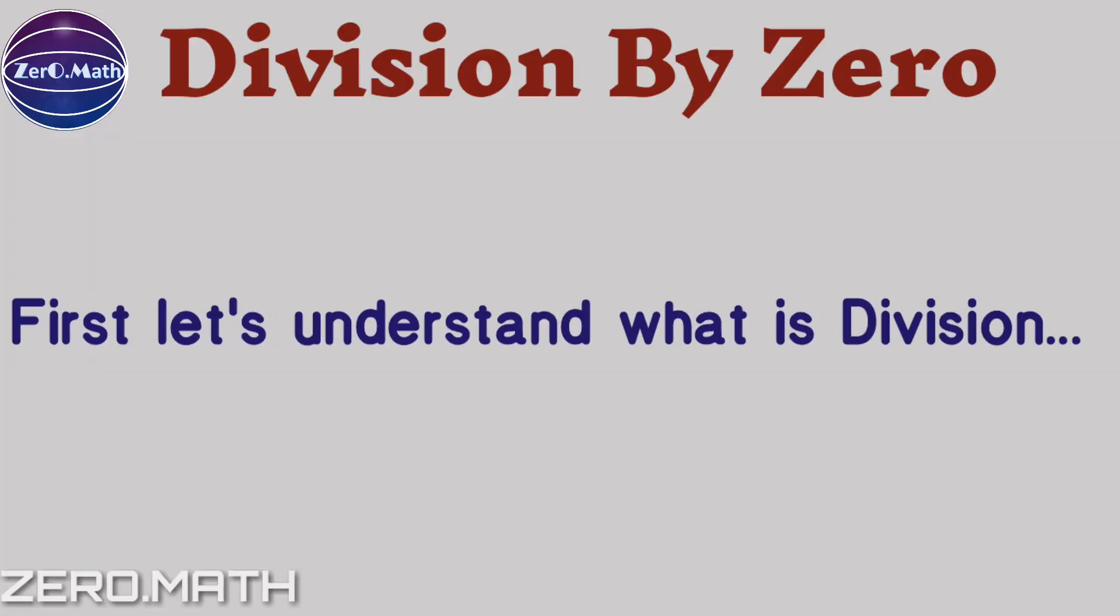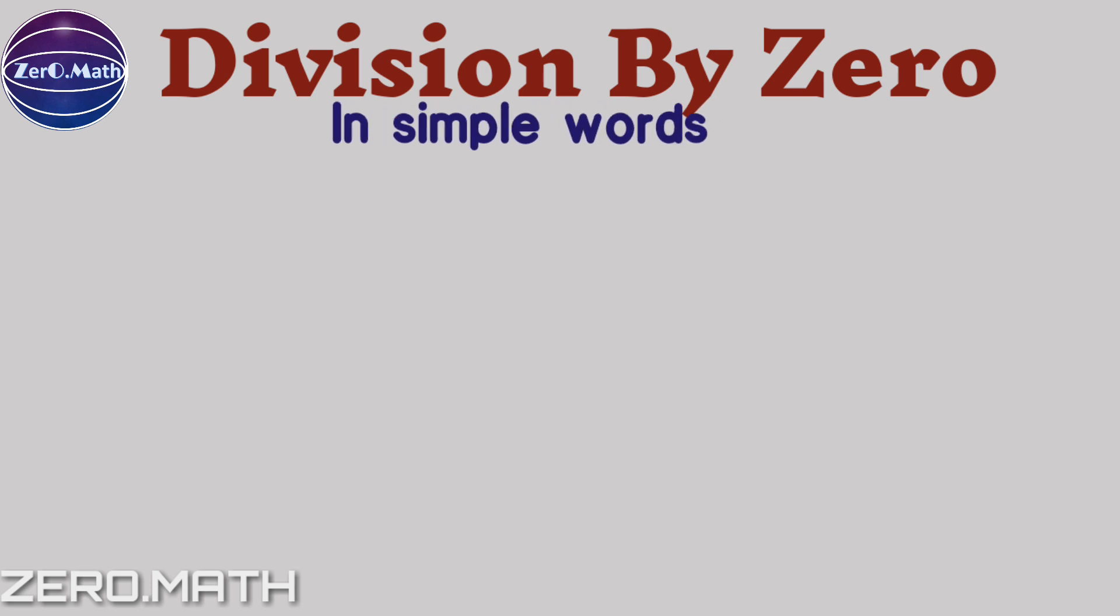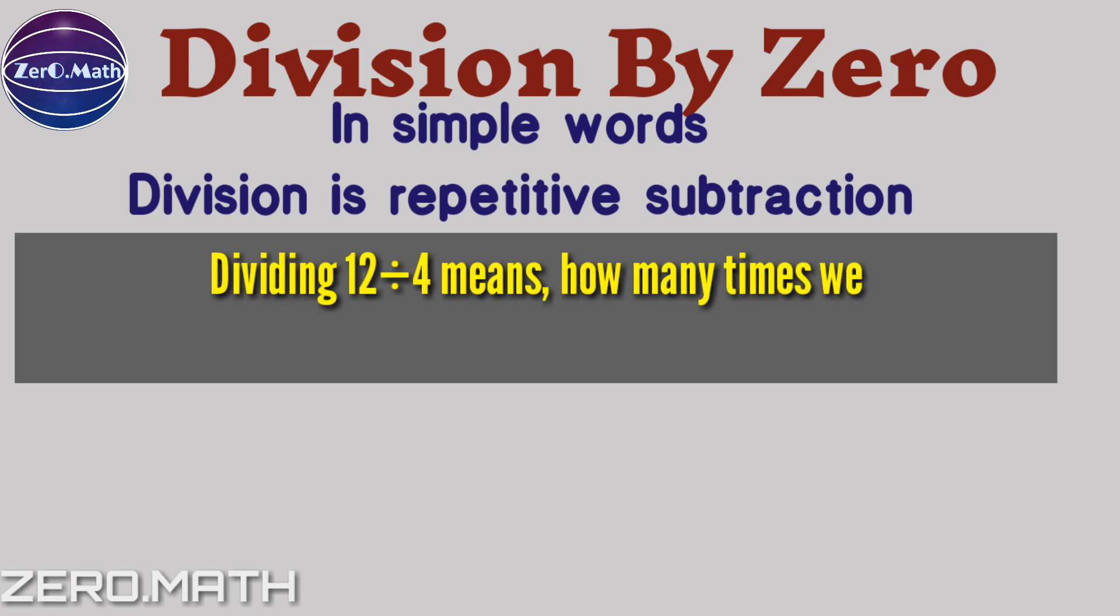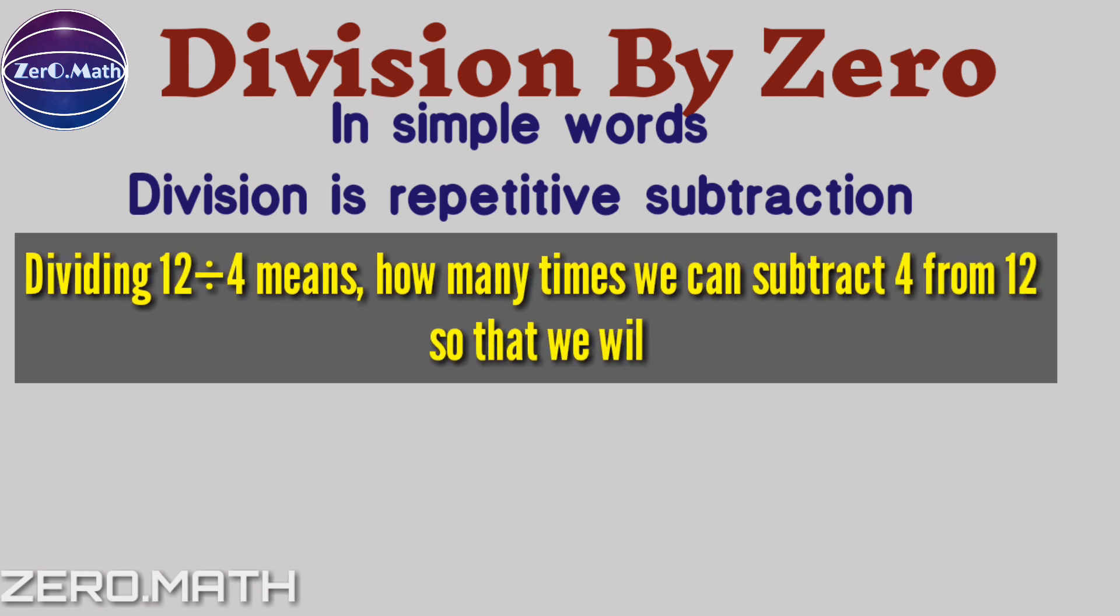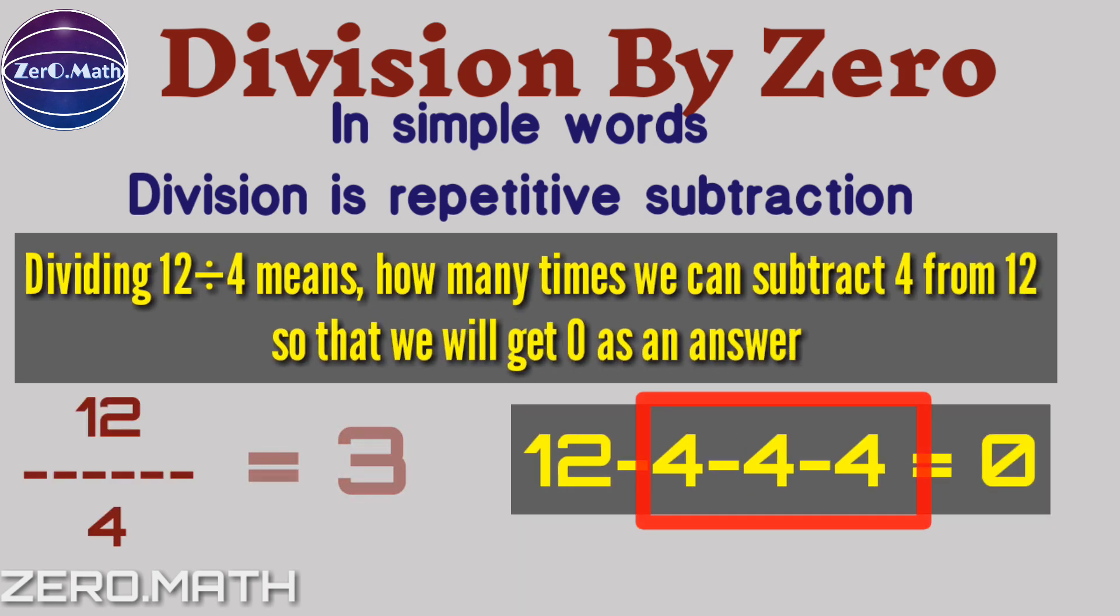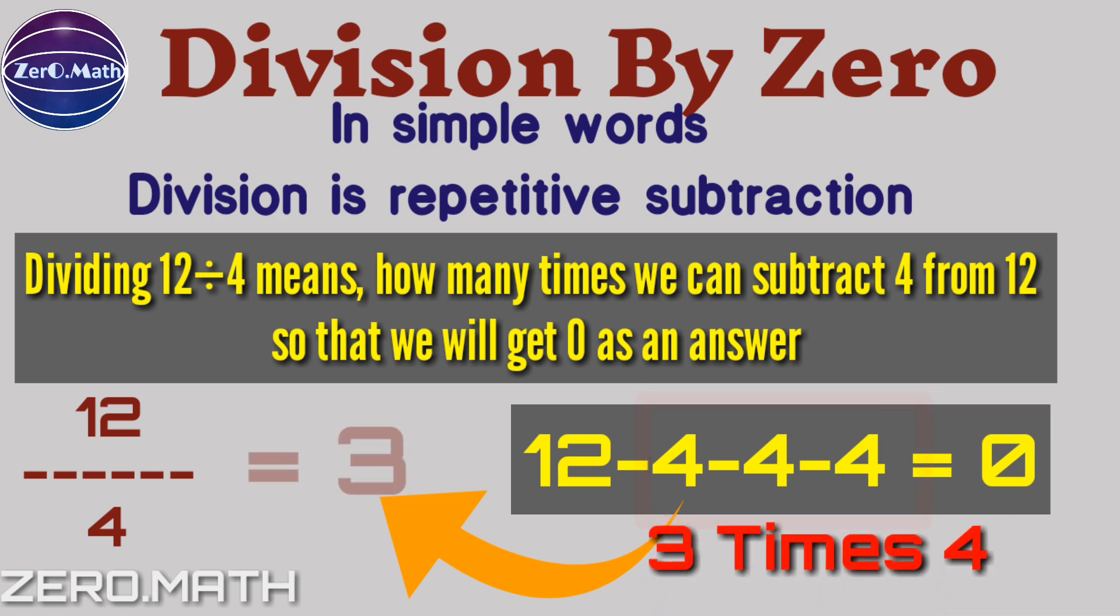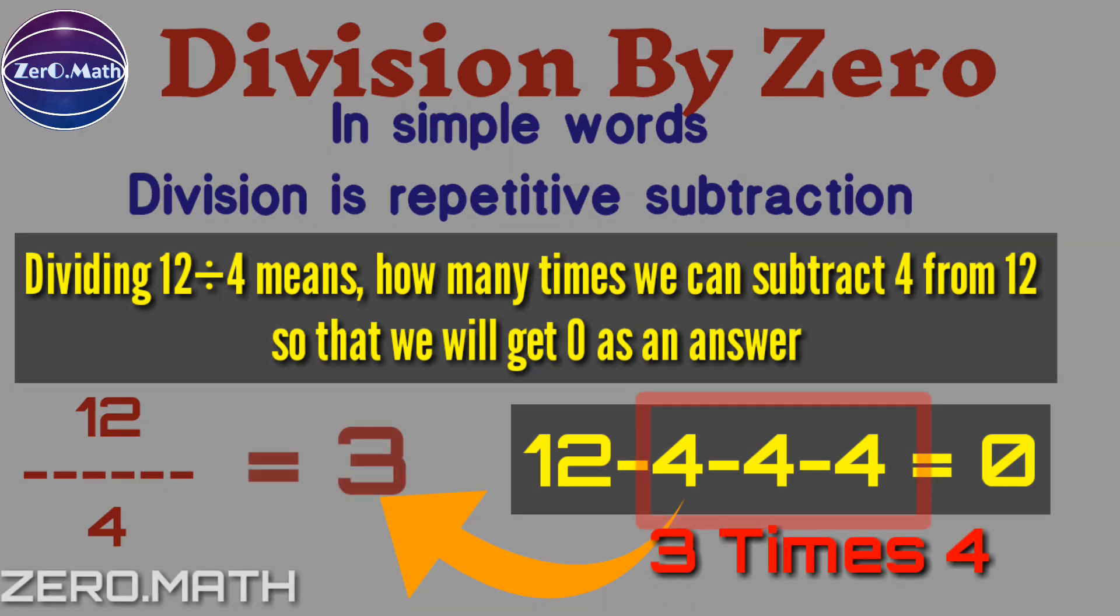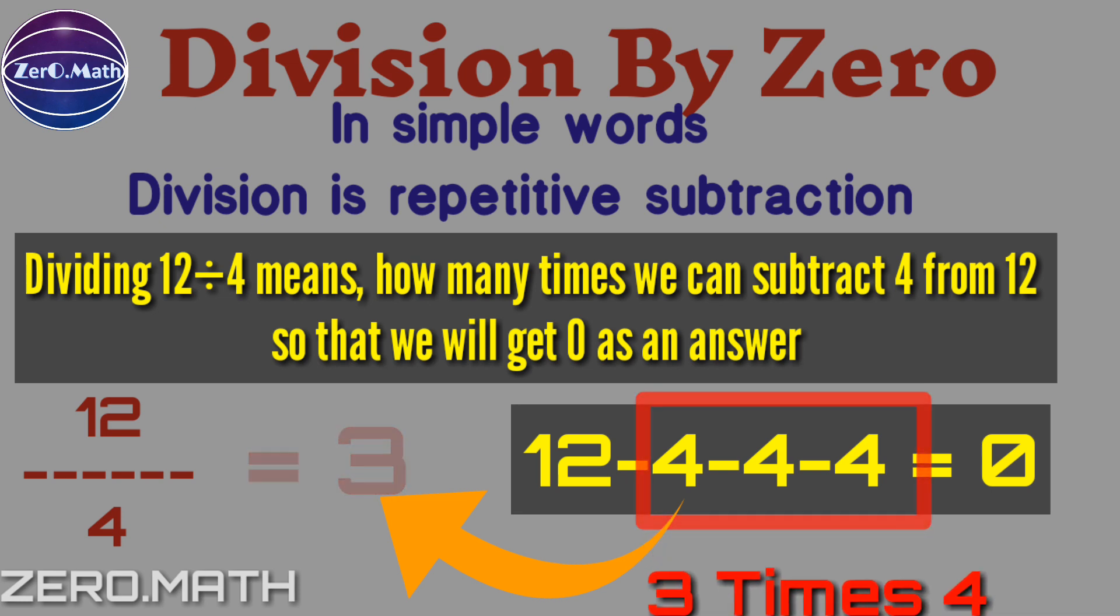First, let's understand what is division. In simple words, division is repetitive subtraction. Dividing 12 by 4 means how many times we can subtract 4 from 12 so that we will get zero as an answer. So, 4 subtracted 3 times from 12 will get zero. Hence, the answer of 12 by 4 is equal to 3, as we have subtracted 4 from 12 three times.